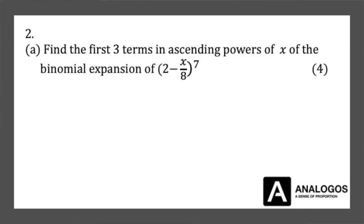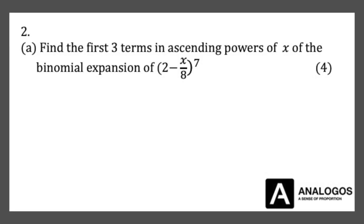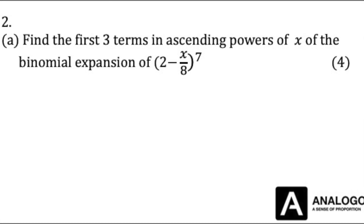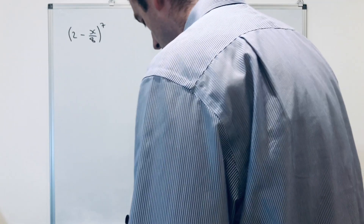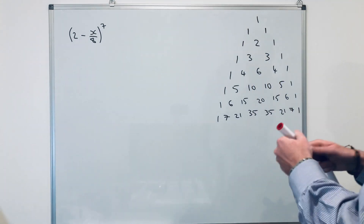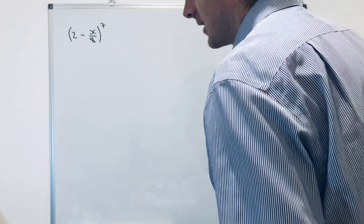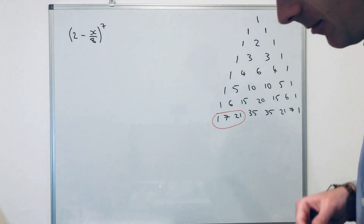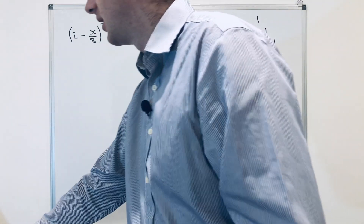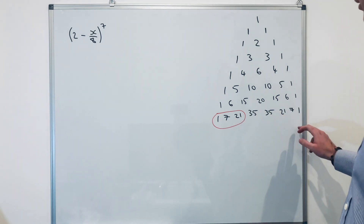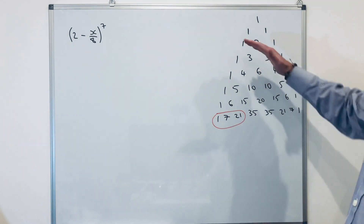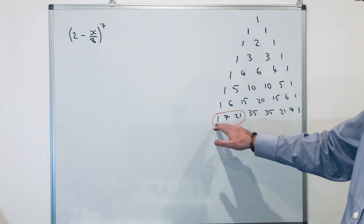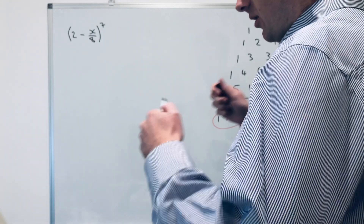Question two: find the first three terms in ascending powers of x of the binomial expansion of 2 minus x over 8, all to the power of 7, for four marks. This is the power of 7, so we use the 7th row. It says the first three terms again, so we're just going to use 1, 7, and 21. In the exam, don't use every single term — that's a waste of time.